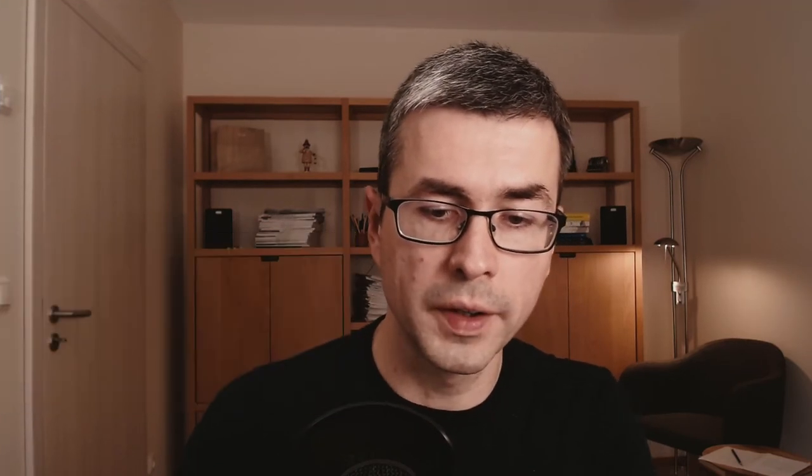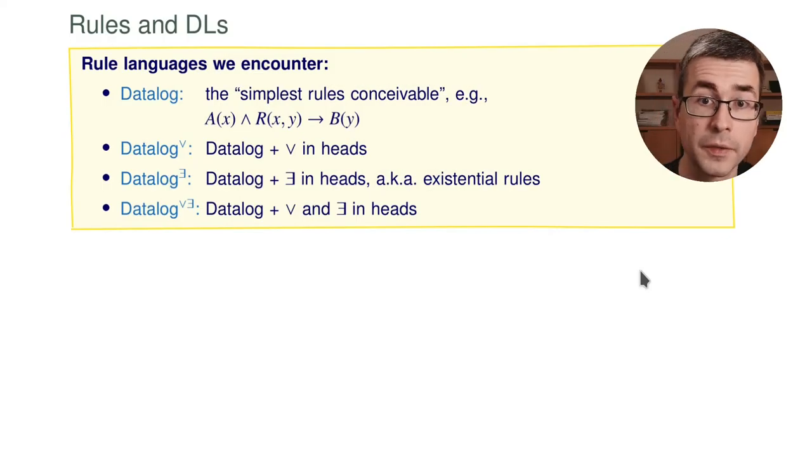This is a useful thing to have and it is particularly interesting in description logic where we often separate the terminological knowledge, the T-box, from the actual facts, the A-box, and the latter is typically much larger than the former. I have explained what kind of languages we consider: we have several variants of rule languages based on datalog with disjunctions, with existentials, or with both.